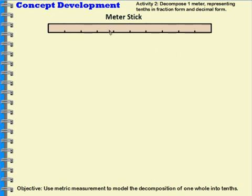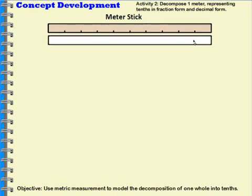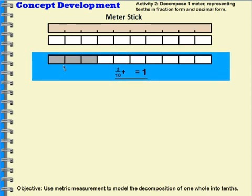This is an activity that you may have done in class. Your teacher could have given you a meter stick and then given you some strips of paper that were cut out, about the same size as the meter stick. You were supposed to take your strip of paper and divide it up into ten equal parts, and then shade in some of the parts. You would work with your group and choose how many you're going to shade in. Let's say one student decided to shade in three of their parts. Then the teacher would say, okay, that's three-tenths — plus how many more would equal one whole? Well, if three plus seven is ten, then three-tenths plus seven-tenths would be ten-tenths, and ten-tenths is equal to one whole.